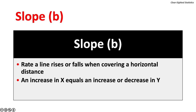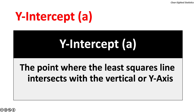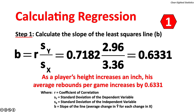The slope B is the rate the least squares line rises or falls when covering horizontal distance. An increase in the independent variable X equals an increase or decrease in the dependent variable Y. The Y-intercept A is the point where the least squares line intersects with the vertical Y-axis. Calculating regression in three steps: Step 1 is to calculate the slope of the least squares line, B. The slope equals 0.6631, meaning that as a player's height increases by one inch, his average rebounds per game increase by 0.6631 rebounds.